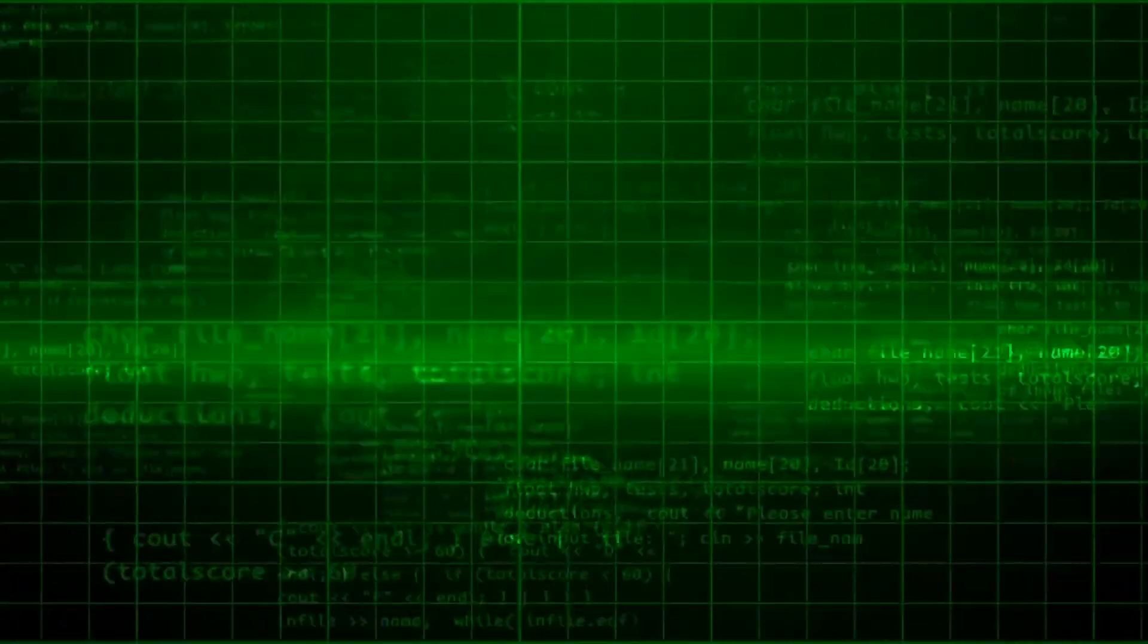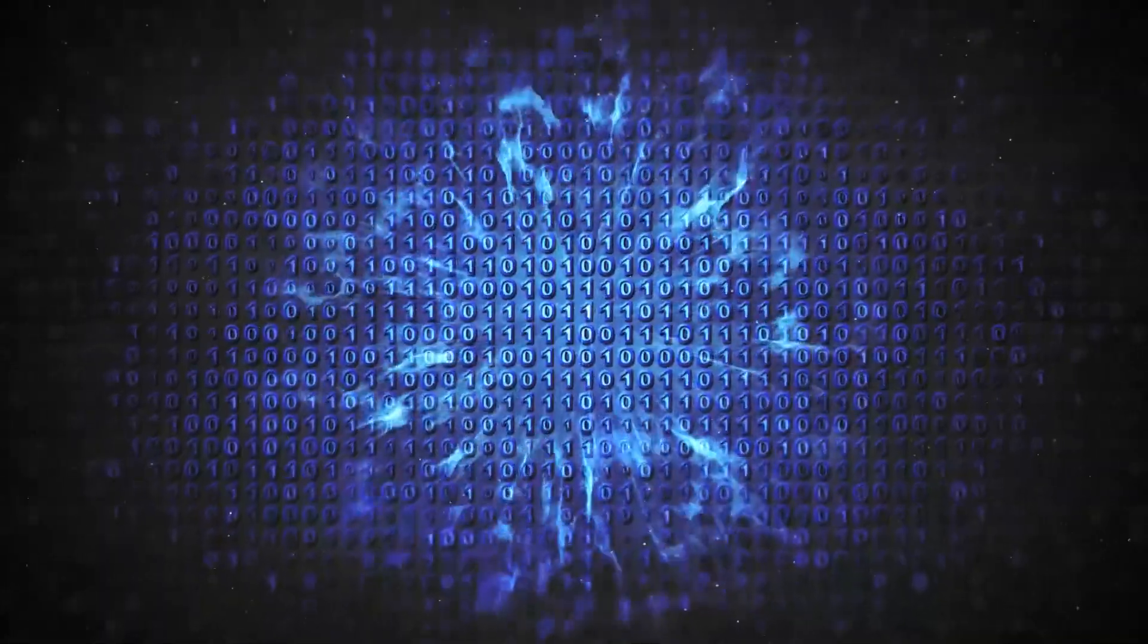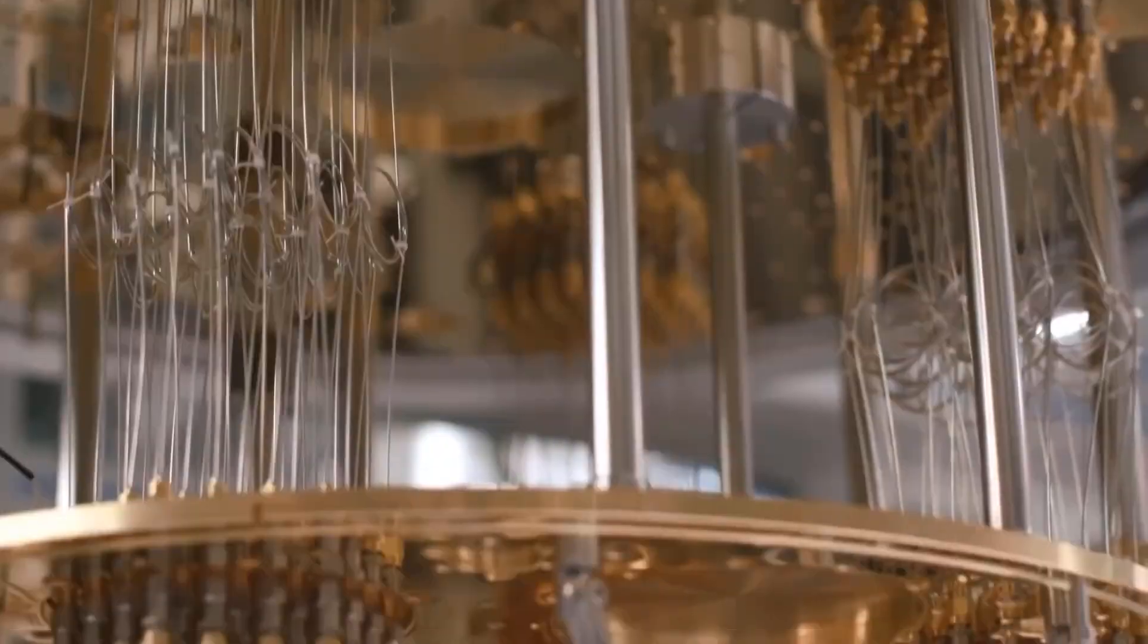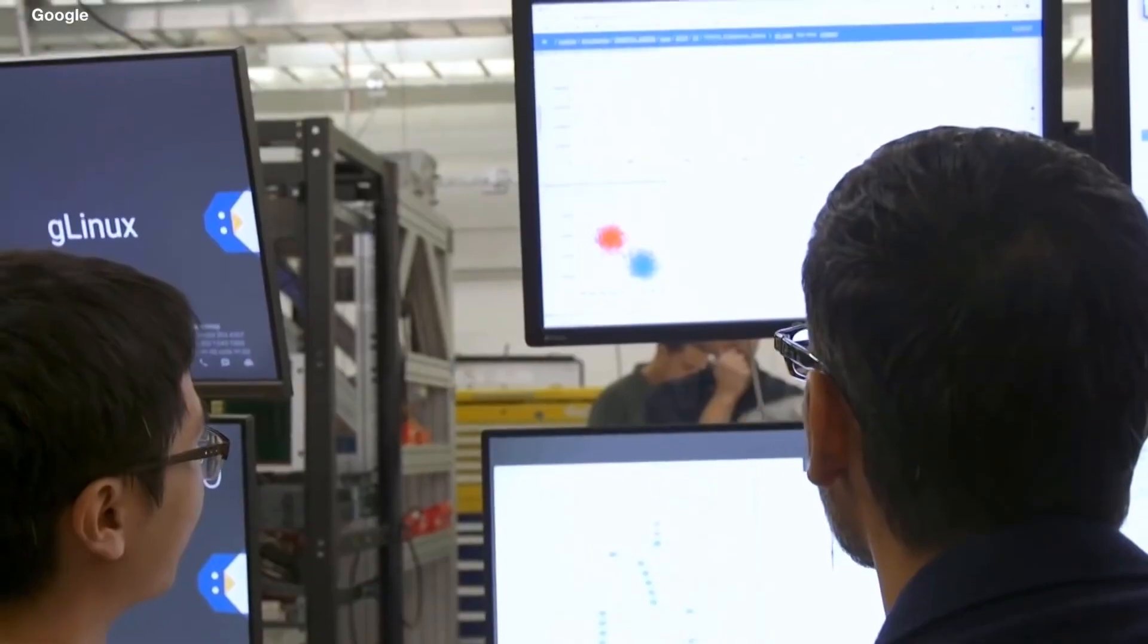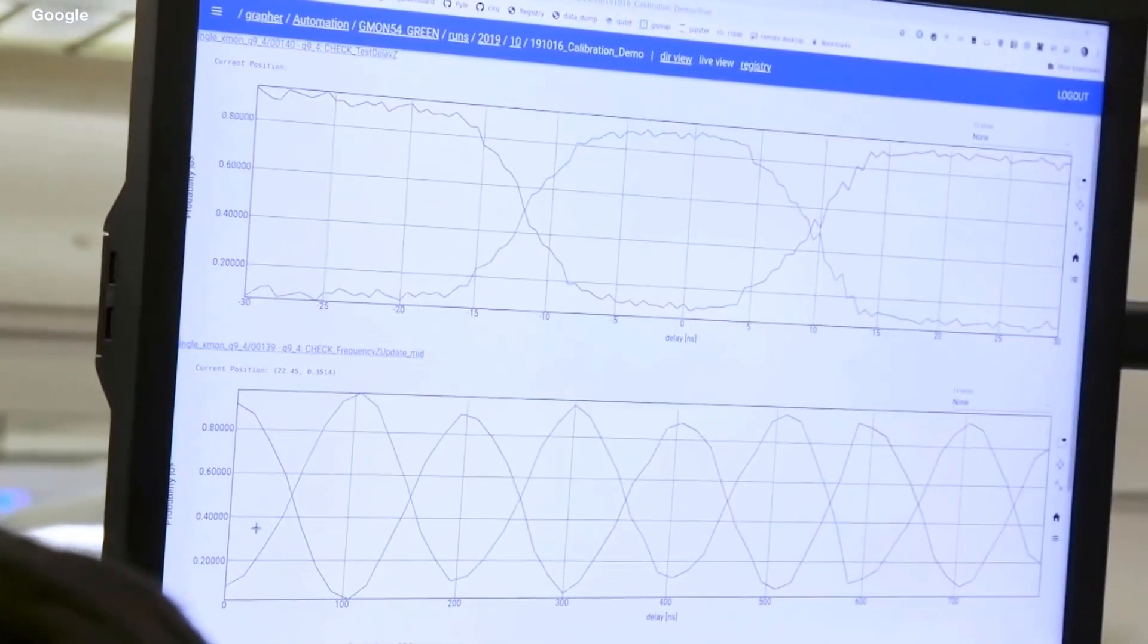A quantum computer is like a super smart machine that uses the tiny special rules of quantum physics to solve really tough problems. Quantum physics is the science of super tiny things like atoms and particles. These things behave in different ways than regular stuff. Quantum computers use these special rules to quickly do tasks that normal computers can't do. This idea is quite new and was mostly just in theories before.